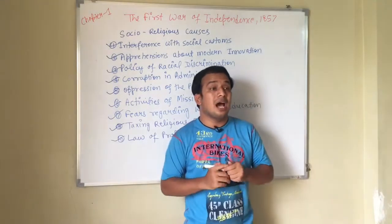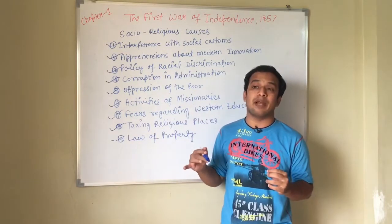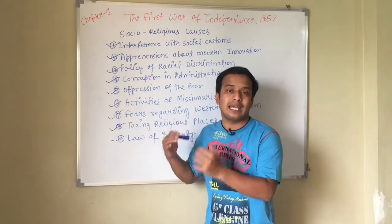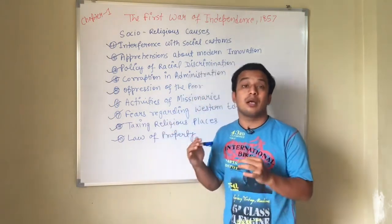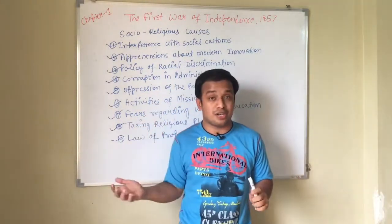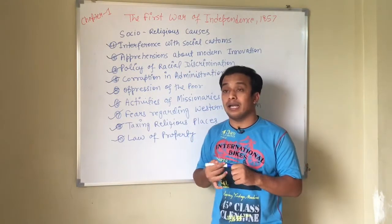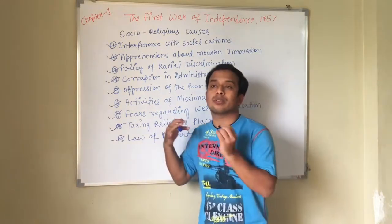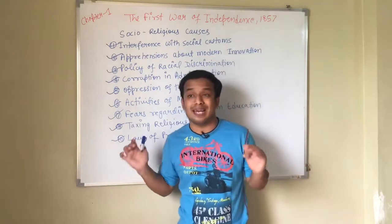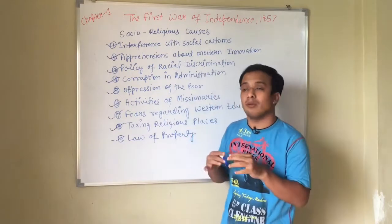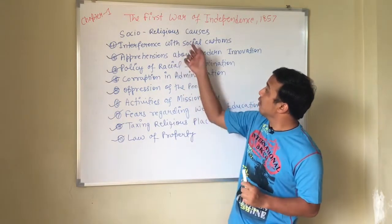Next was the law of property. The Religious Disability Act of 1850 was passed by the British government. This act gave permission that if any person converted — for example from Muslim to Christianity, or from Hindu to Christianity — then the father's inherited property would also be transferred to that converted son. Previously this system did not exist — if someone converted, they would not get the property. But the Religious Disability Act of 1850 enabled property transfer to converts. This also created anger amongst the Indians. So these were the socio-religious causes.